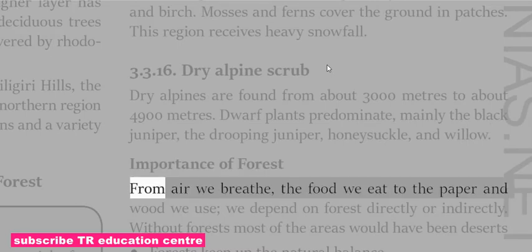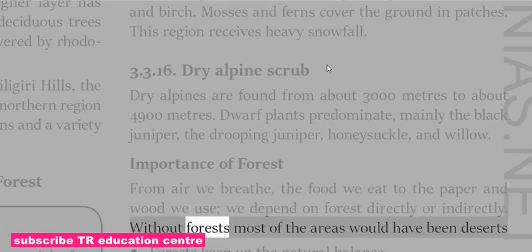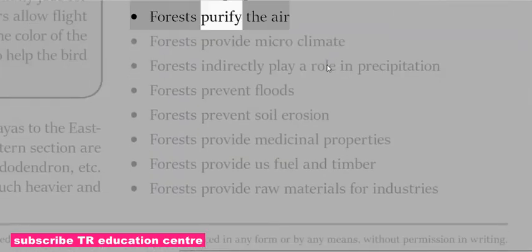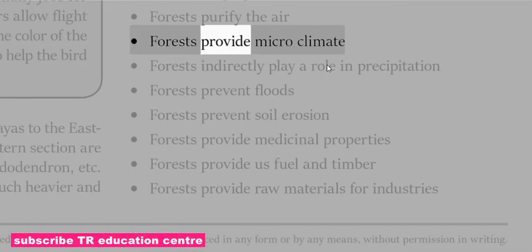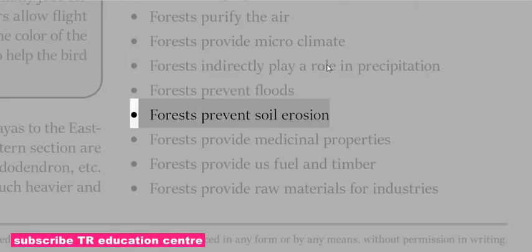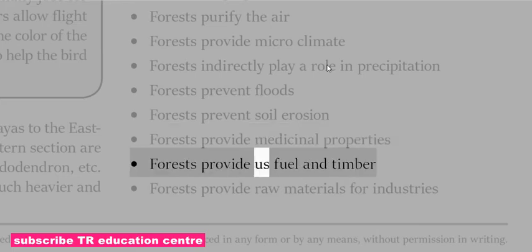From the air we breathe to the food we eat and the paper and wood we use, we depend on forests directly or indirectly. Without forests, most areas would have become deserts. Forests keep up the natural balance, purify the air, provide microclimate, play a role in precipitation, prevent floods, prevent soil erosion, provide medicinal properties, and provide dust fuel, timber and raw materials for industries.